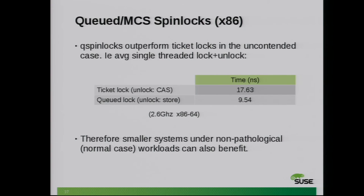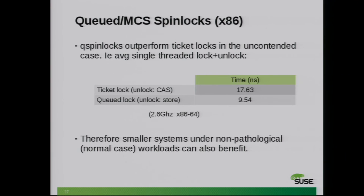But locks being really heavily contended is not always the case. There are cases where locks aren't contended. You can measure the new QSpinLocks with the unlocking overhead. The TicketSpinLock unlocks with a compare-and-exchange; the QSpinLock does it with a simple store. For 10,000 lock and unlock pairs, the average was almost 50% less overhead — less time to do the unlock.